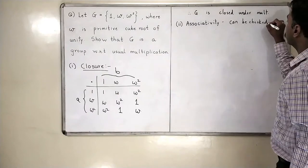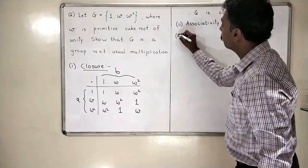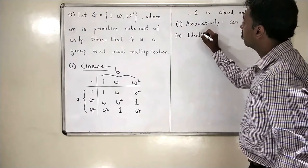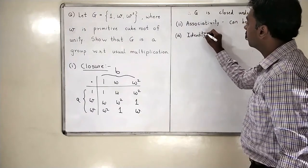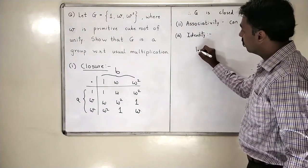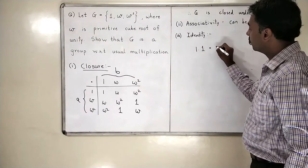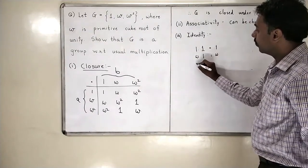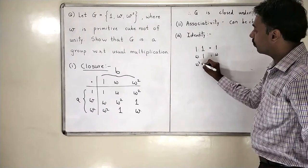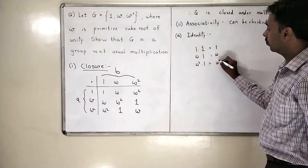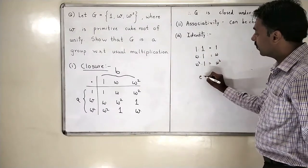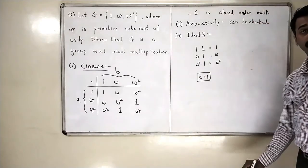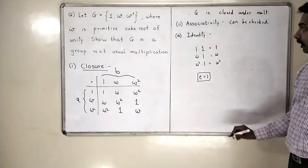The third property is identity. From the table I clearly see that any element multiplied by 1 gives the same element back: omega times 1 is omega, and omega square times 1 is omega square. So the identity of this set is 1.